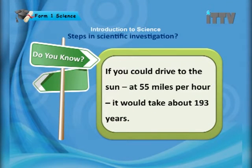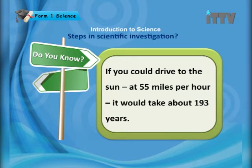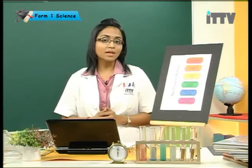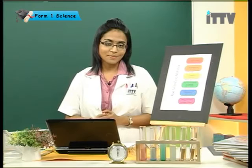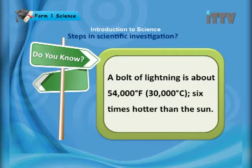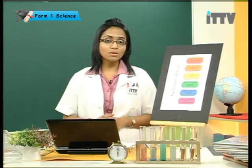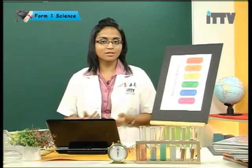If you could drive to the sun at 55 miles per hour, it would take about 193 years — that is how far the sun is located away from the earth. A bolt of lightning is about 54,000 degrees Fahrenheit, or 30,000 degrees Celsius — six times hotter than the sun. Just imagine if you get struck by lightning. That is so dangerous.